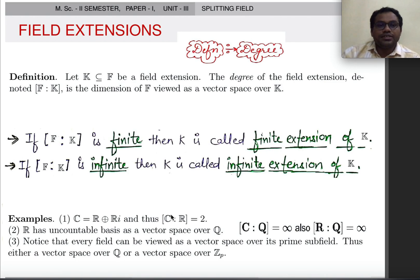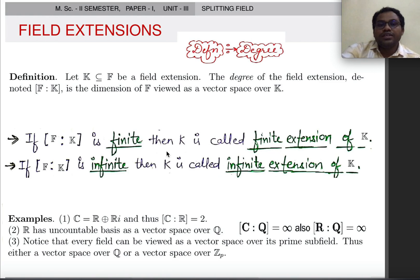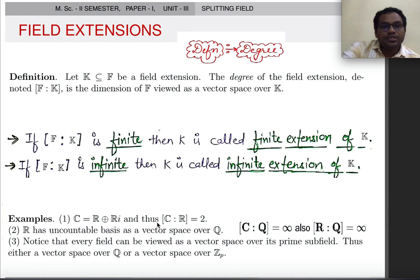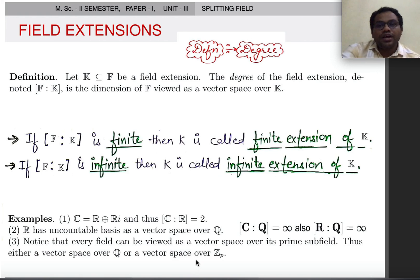The degree of the field extension is denoted [F:K] and is the dimension of F viewed as a vector space over K. If the degree of F over K is finite, then F is called a finite extension of K. For example, [C:R] = 2 since the basis is {1, iota}. On the other hand, [R:Q] is infinite because Q is countable and R is uncountable, and similarly [C:Q] is also infinite.